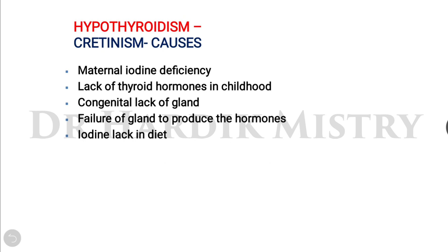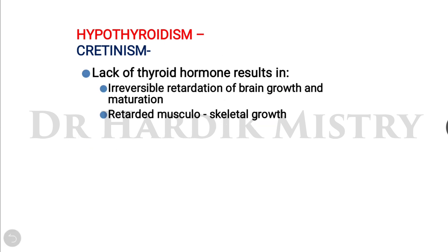Congenital deficiency of thyroid hormone results in a condition known as cretinism. Causes include maternal iodine deficiency, lack of thyroid hormones in childhood, congenital absence of the entire thyroid gland, failure of the gland to produce hormones, and iodine deficiency in the diet. The lack of thyroid hormone results in irreversible retardation of brain growth and maturation, as well as retarded musculoskeletal growth.